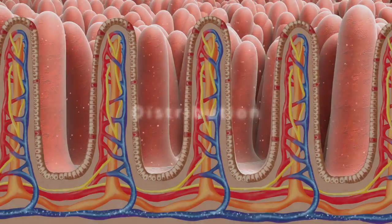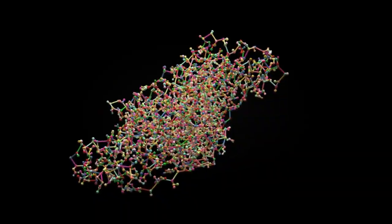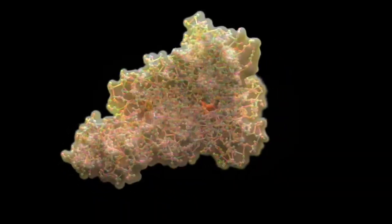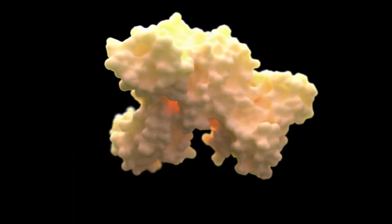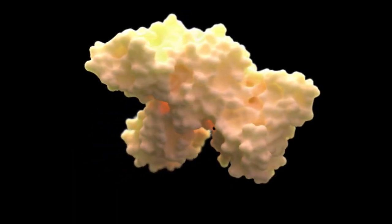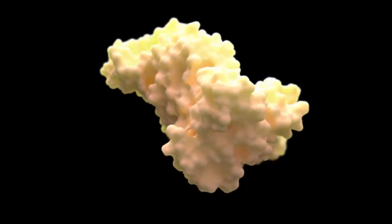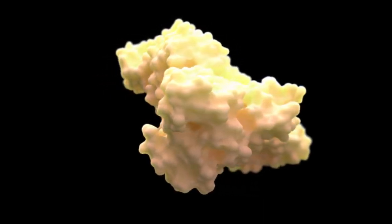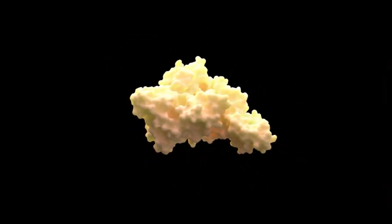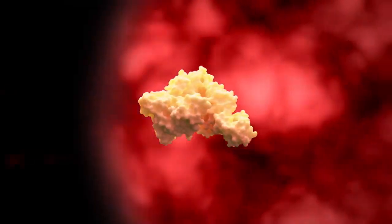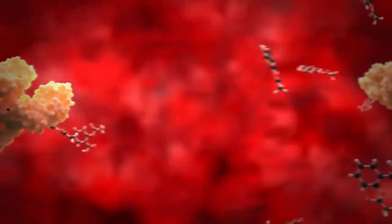Distribution. Blood plasma contains complex molecules called albumin. Albumin is a protein made by the liver, which transports nutrients around the body. Albumin also binds to drugs that enter the bloodstream. Here you can see some of the aspirin molecules binding to the albumin.